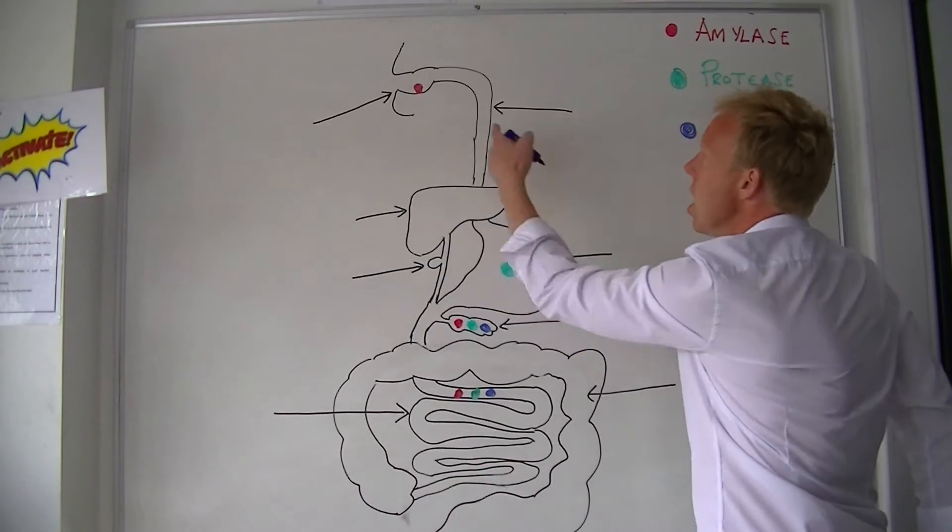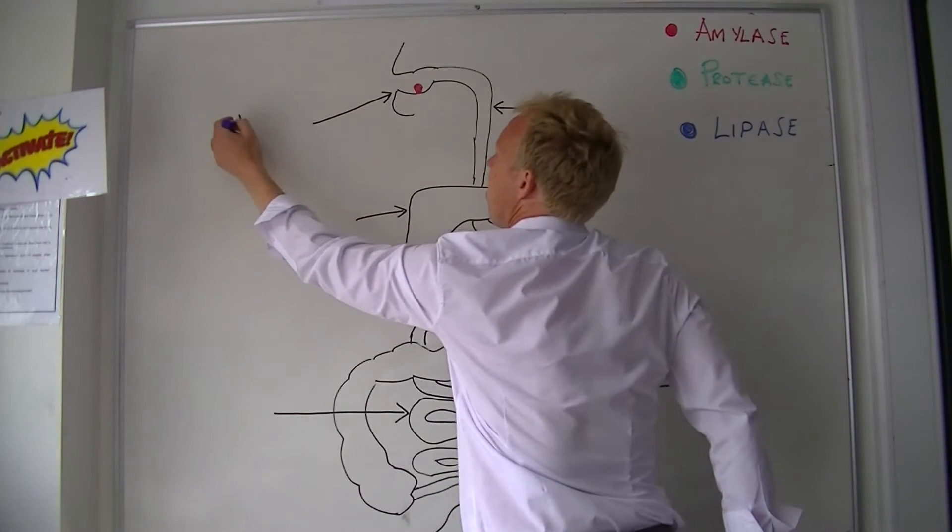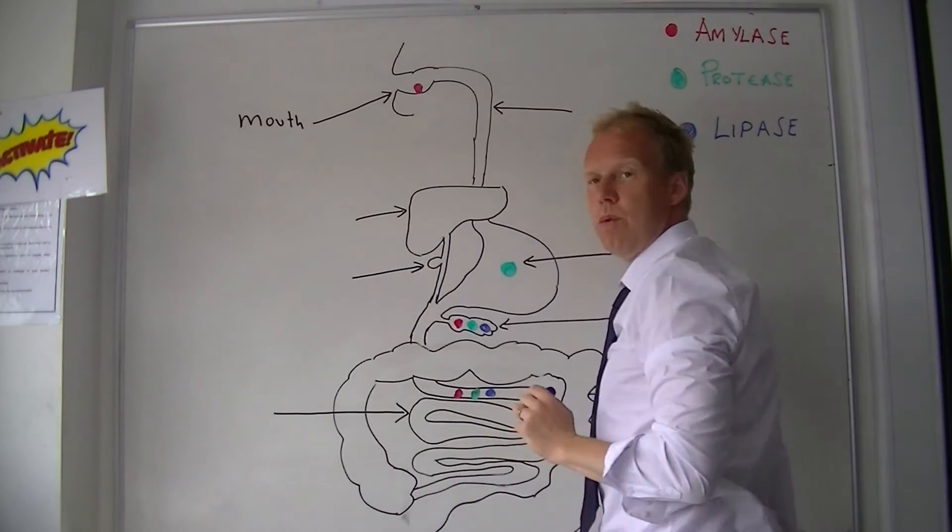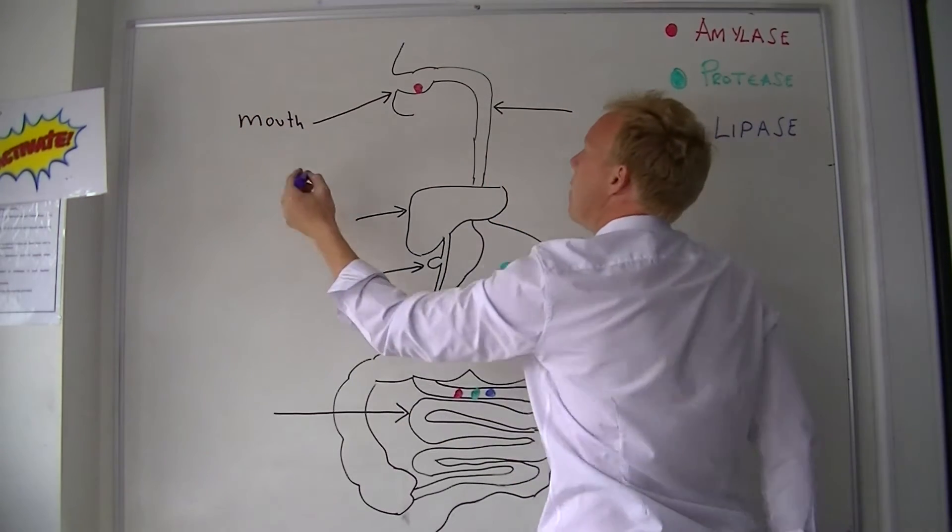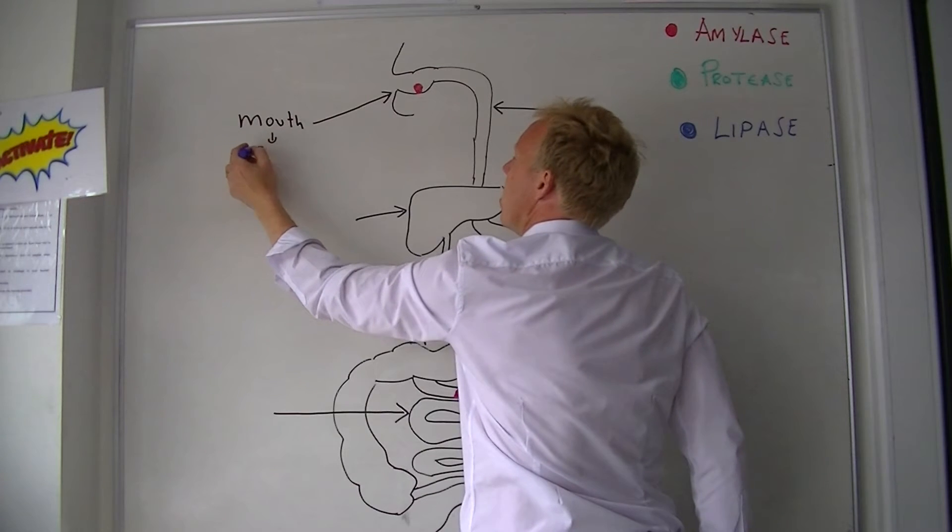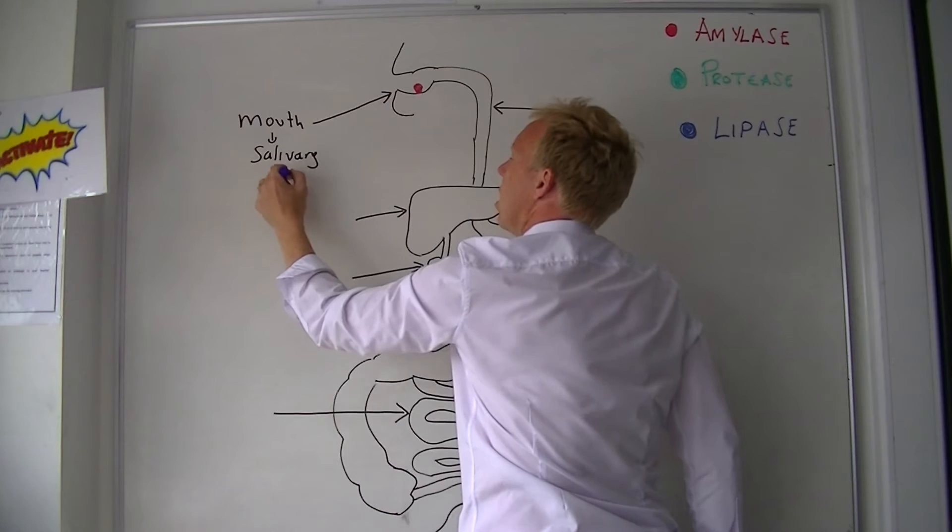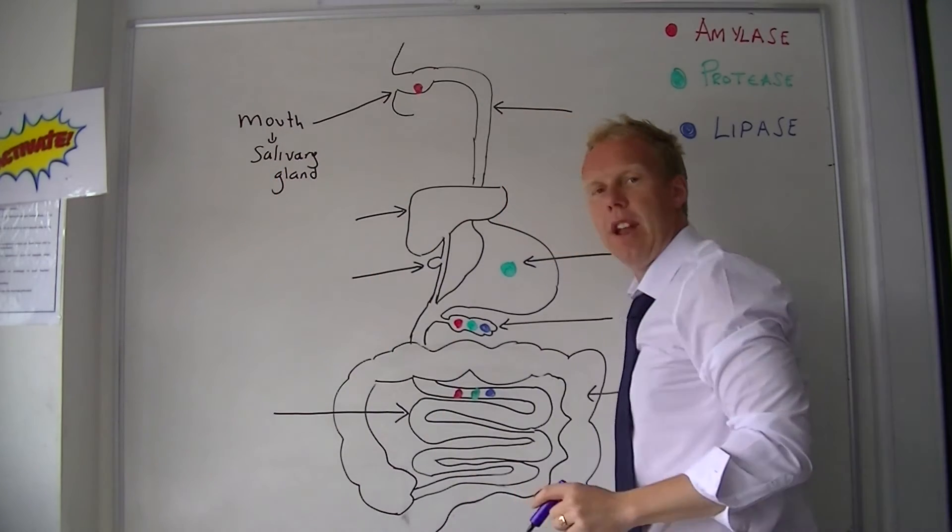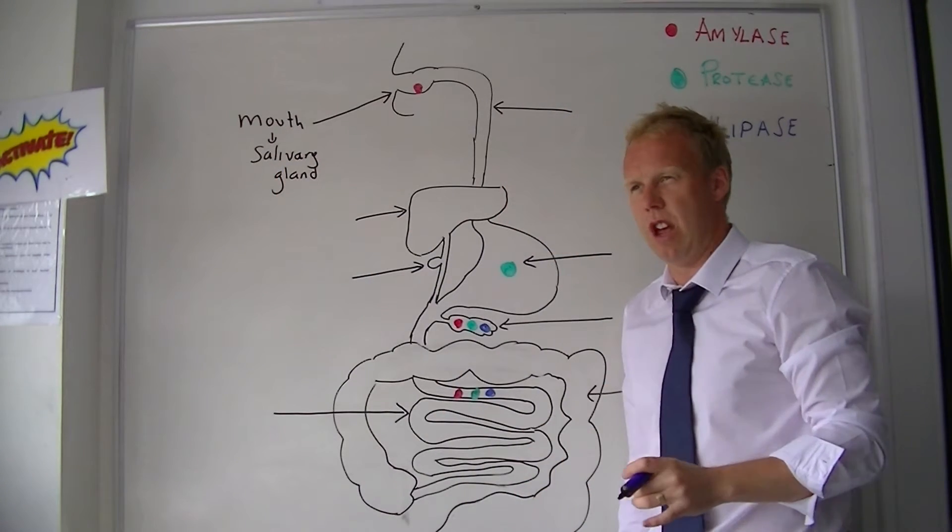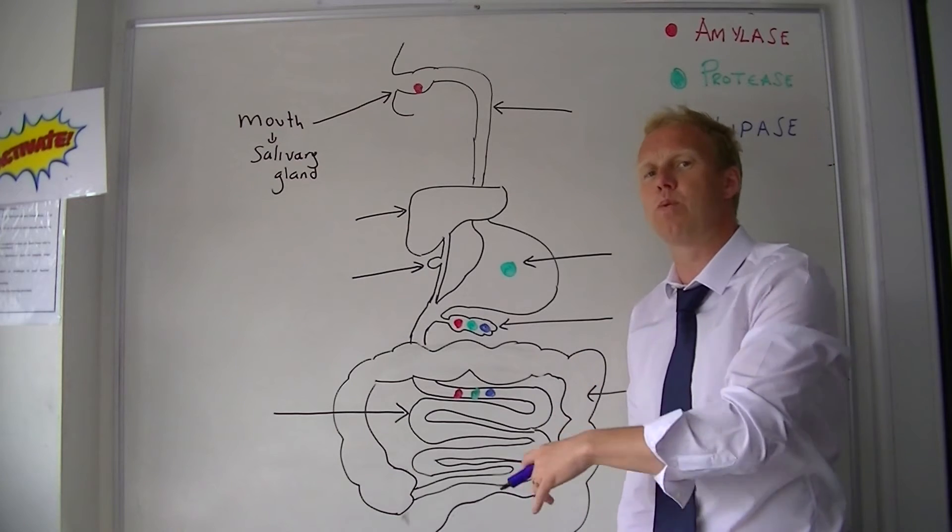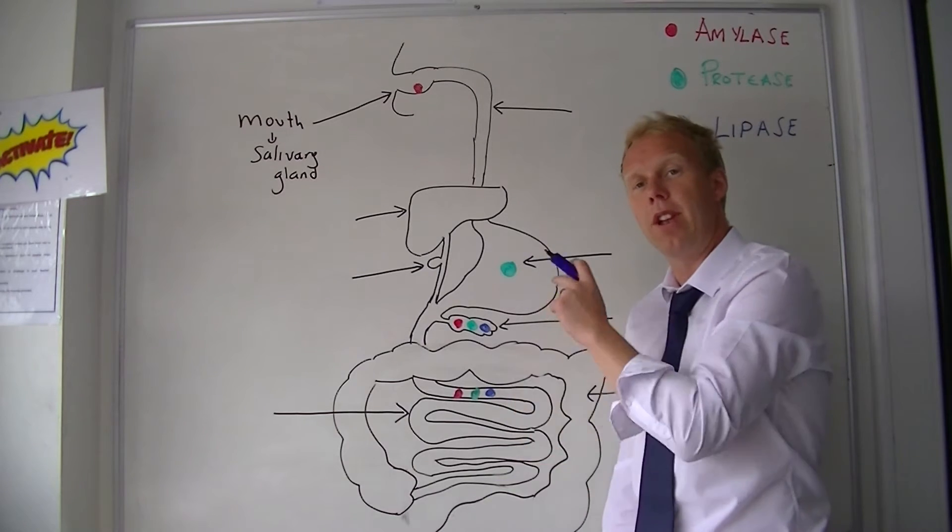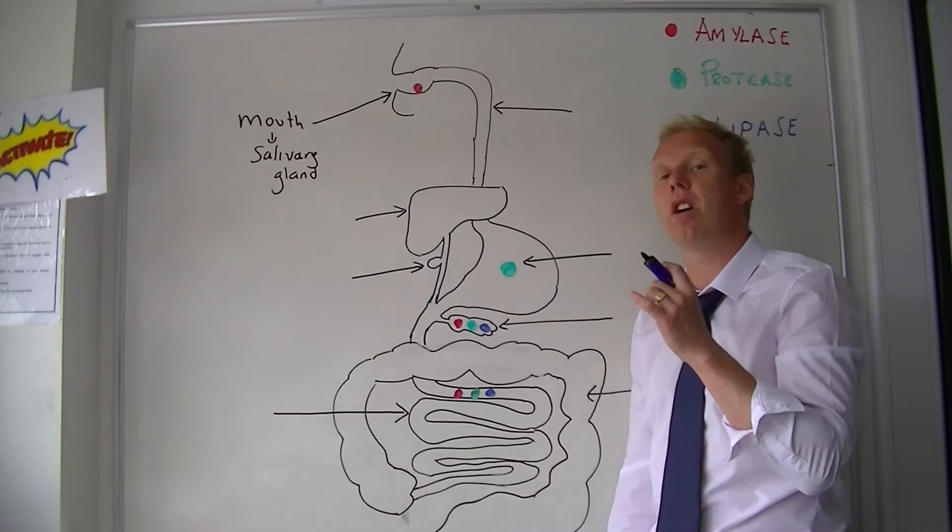The mouth is where I'm trying to draw here. In the mouth, I need us to be aware that there is a gland called the salivary gland. Now, glands make secretions and a lot of the time these are going to be enzymes, and that's what most of this is going to be about—the digestive system and the enzymes that are in it.